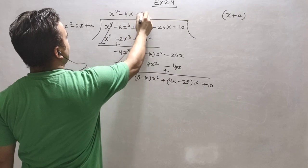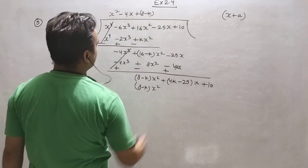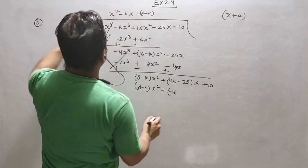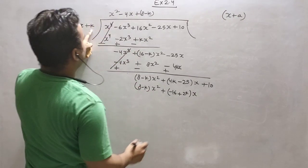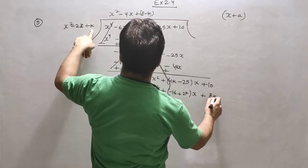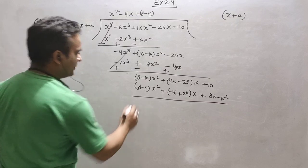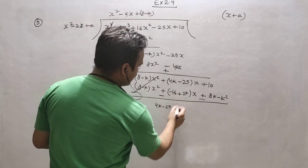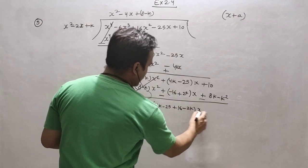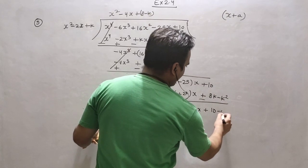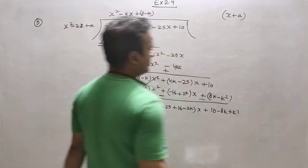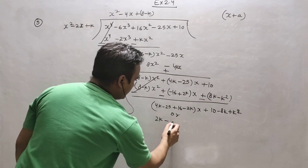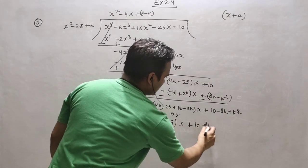We have to multiply by 8 minus k, so it will be (8 minus k)x squared. This 8 minus k multiplied by minus 2 gives minus 16, and minus minus plus 2kx. This 8 minus k multiplied by the constant gives 8k minus k squared. Minus minus and cancel. Now 4k minus 25 and changing sign: plus 16 and minus 2k, x here, and 10 minus 8k plus k squared. Simplifying: the remainder is (2k minus 9)x plus (10 minus 8k plus k squared).